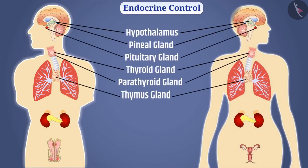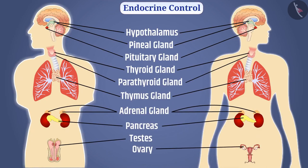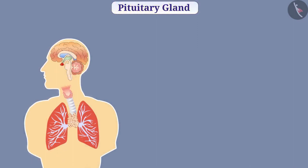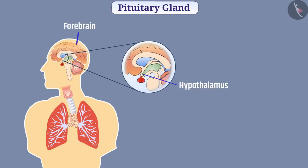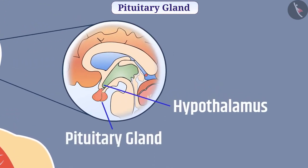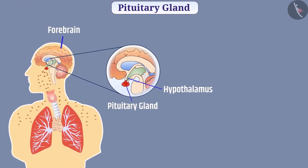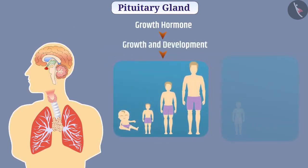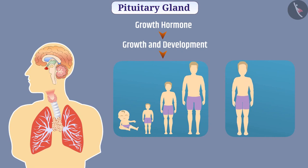The main endocrine glands in the human body are as shown. The pituitary gland is present below the hypothalamus in the forebrain part of our brain. The pituitary gland secretes various hormones, such as growth hormone, which controls the growth and development of the body. If the secretion of growth hormone is high during childhood, there is abnormal growth of the body, which is called gigantism. If the secretion of growth hormone is less during childhood, growth is blocked and height does not increase, which is called dwarfism.